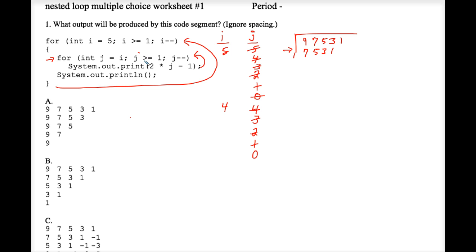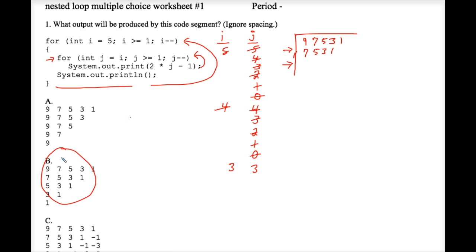We loop back up and hit zero — zero is not greater than or equal to one, so we're finished with the inner for loop. We print the blank line, loop back up to the very top, i minus minus — so three. Hopefully you see a pattern now. At this point you know the answer is B, because the second row starts with seven here, not nine. The answer is B.